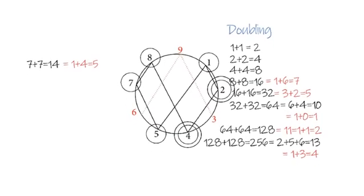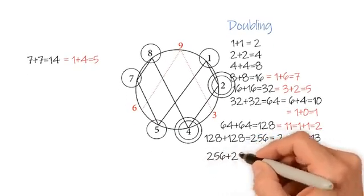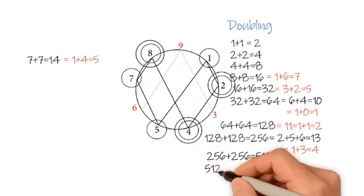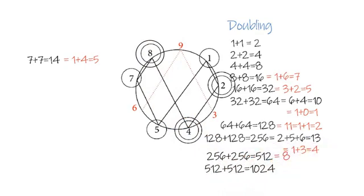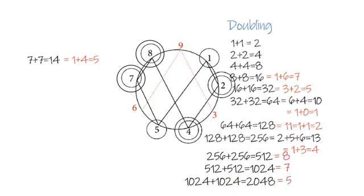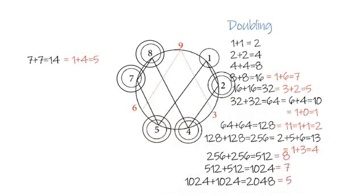By continuing, 256 doubled is 512, again reducing back to 8. 512 doubled is 1024, which reduces back to 7. 1024 doubled is 2048, which reduces back to 5.